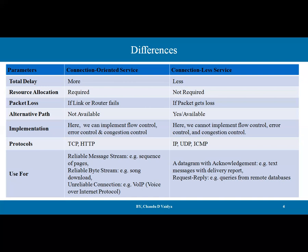Use cases: connection-oriented service is used for reliable messaging, for example sequencing of pages; reliable byte streams, for example song downloads; and unreliable connections like VoIP. For connectionless: datagrams with acknowledgement such as text messages with delivery reports, and request-reply for example queries to remote databases. These are the key differences between the two services.